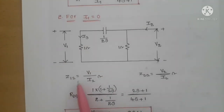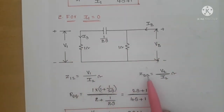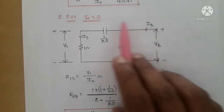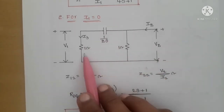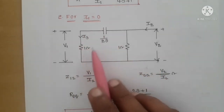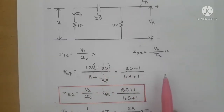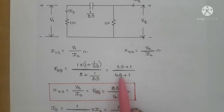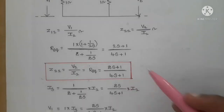For Z22 = v2/i2: the elements 1/(2s) and 1 ohm (port 1 branch) are in series, giving impedance (1 + 1/(2s)), and this is in parallel with 1 ohm. Solving: Z22 = 1·(1 + 1/(2s)) / (2 + 1/(2s)) = (2s + 1) / (4s + 1).